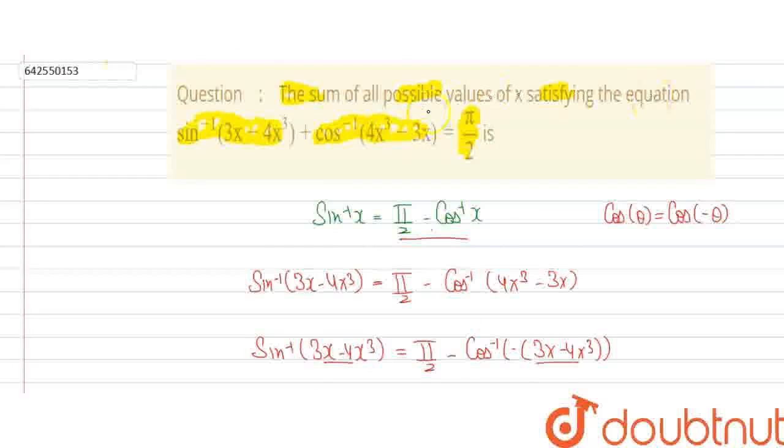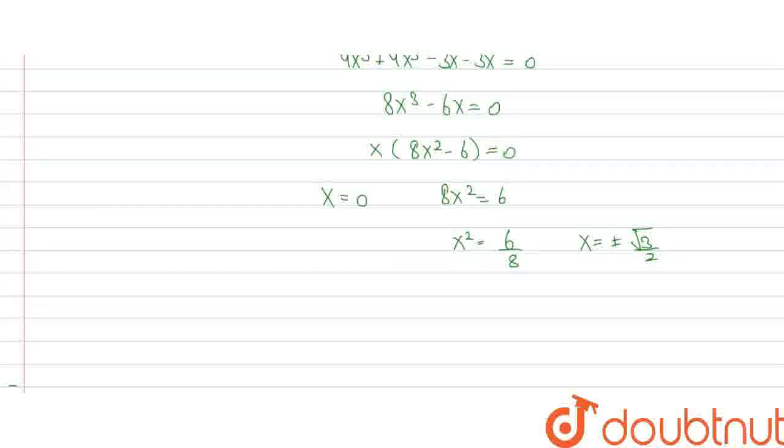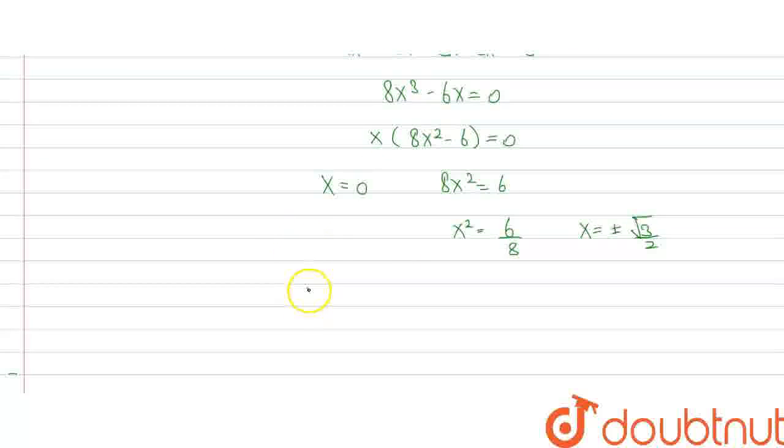In this equation, we have to find the sum of all possible values of x. So we have to find the sum of all possible values, which is 0 + √3/2 + (-√3/2). The sum of this will become 0. As in this question we have to find the sum of roots of this equation, the answer is 0.